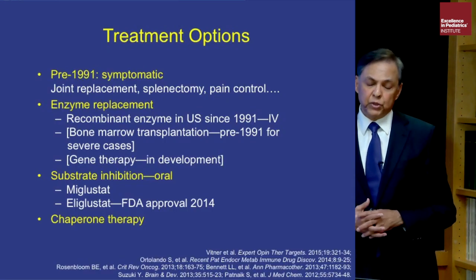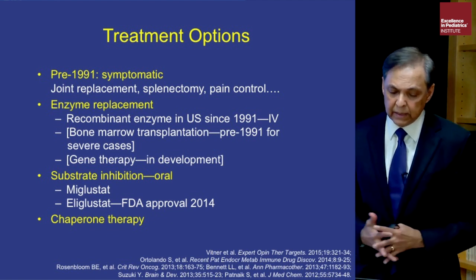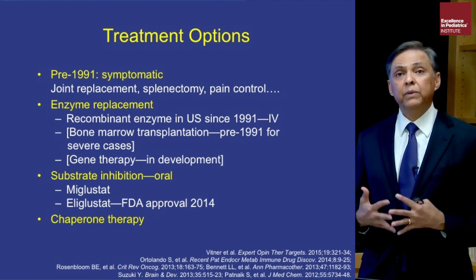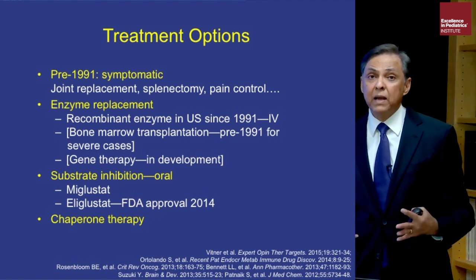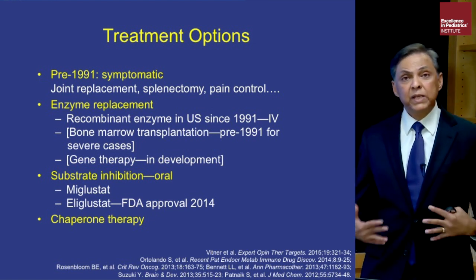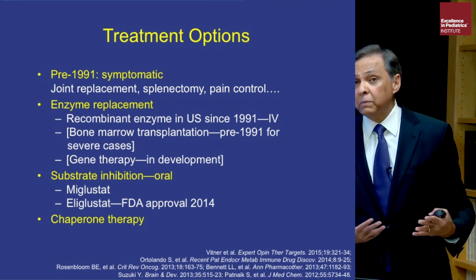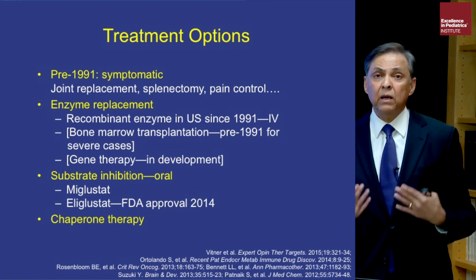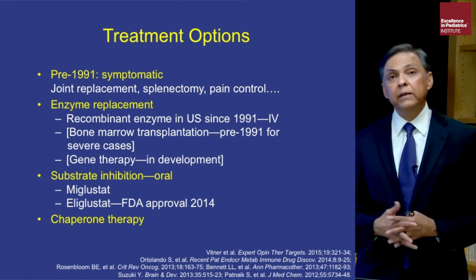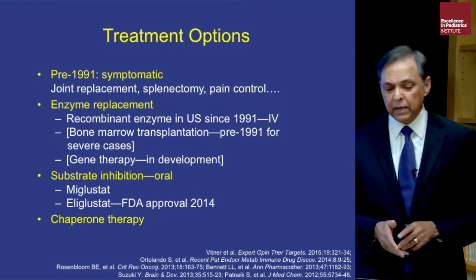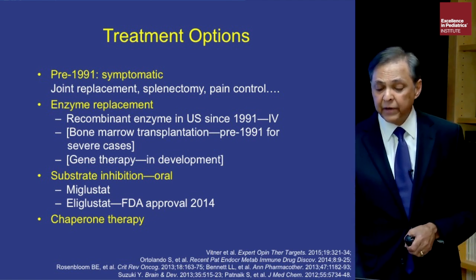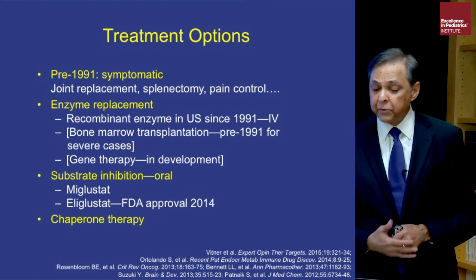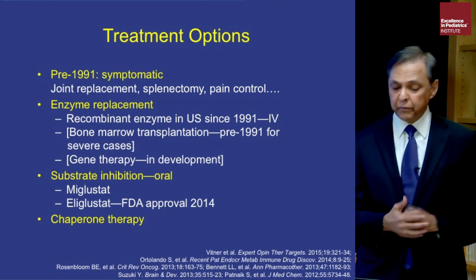Prior to 1991 we only had symptomatic care. If the spleen became large enough and blood counts were very low, one would perform splenectomy, which gave temporary relief but then the disease would enter an accelerated phase with devastating bone disease and life-threatening complications. Now of course we have intravenous enzyme replacement therapy, which has replaced bone marrow transplantation that used to be performed in the 1980s.